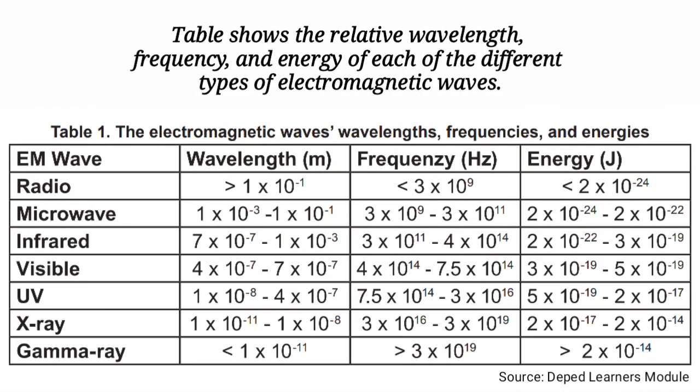The table below shows the relative wavelength, frequency, and energy of each of the different types of electromagnetic waves. As you can see in the table from radio waves down to gamma rays, the wavelength of each EM wave is decreasing while the frequency is increasing. The energy also increases with increasing frequency as you can see in the table.